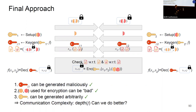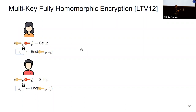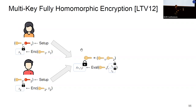We can do better than depth-dependency using multi-key fully homomorphic encryption. Both parties generate their own public-key/secret-key pair and use their public key to encrypt their input. The public keys can be joined and a homomorphic evaluation takes both ciphertexts as input — Alice provides her encryption of x1, Bob his encryption of x2 — and together with a global public key evaluates function f, resulting in a single ciphertext encrypting the complete function evaluation.